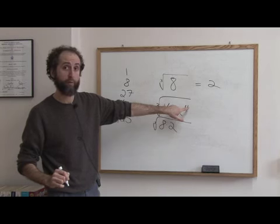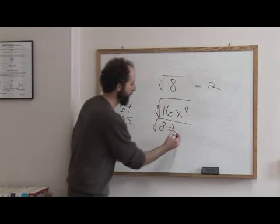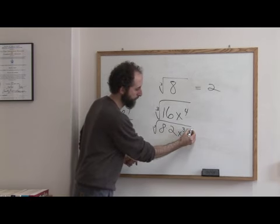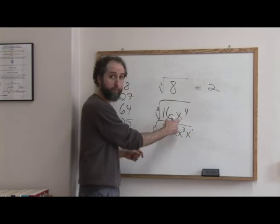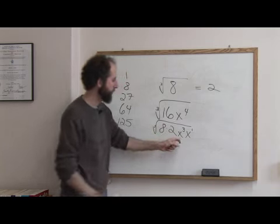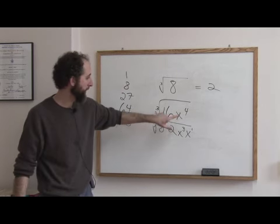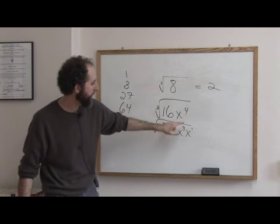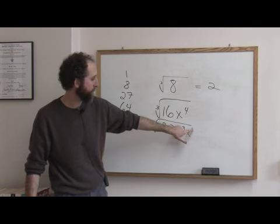Now, x to the fourth. We're going to break that down to be x cubed and x. Because x cubed times x, which is really x to the first, is x to the fourth. We broke it down so there's a cube. That one's even easier to see in a sense than the numbers, because you don't need your list. You just want to take out a cube, and then have whatever's left over there.